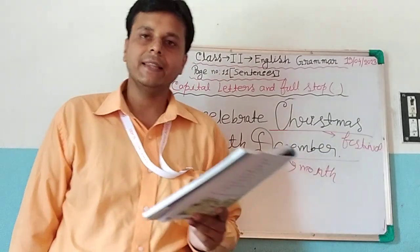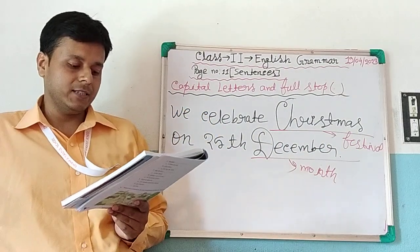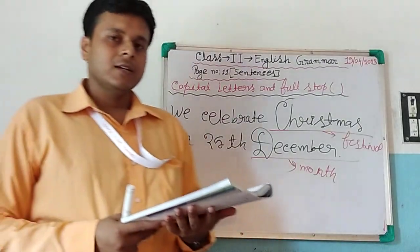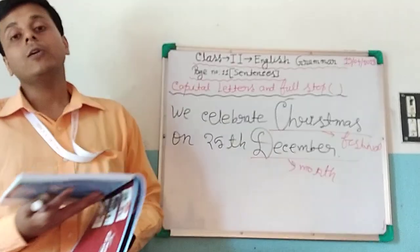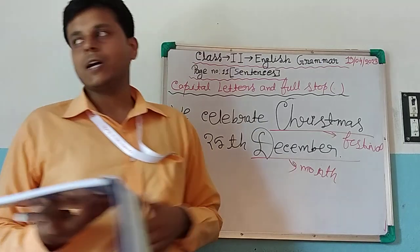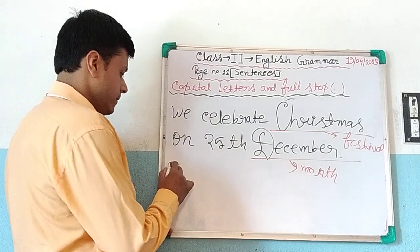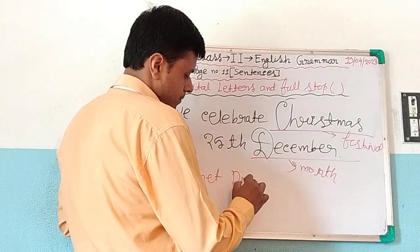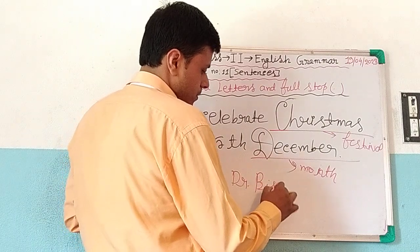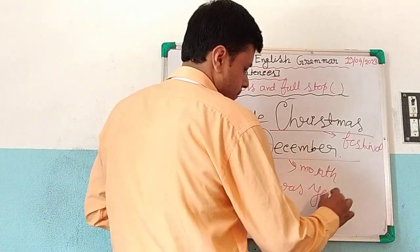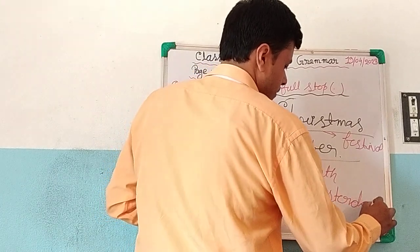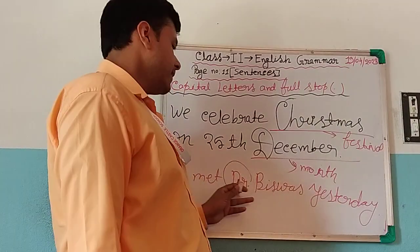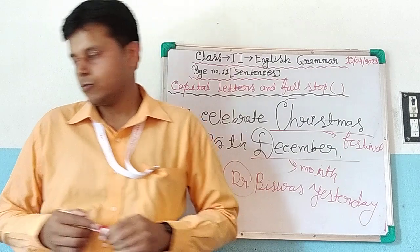For the names of languages — Bengali, Hindi — we always use a capital letter. And for titles when used with names: when we say Dr. Vishas or Professor Rose, we always use a capital letter. When we say Dr. Vishas, the title is used with the person's name, so you should use a capital D. The title is used with the person, so we always use a capital letter.